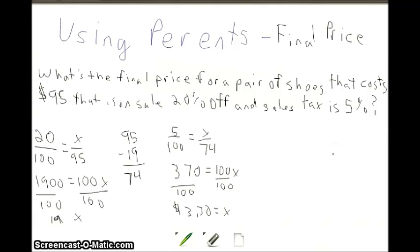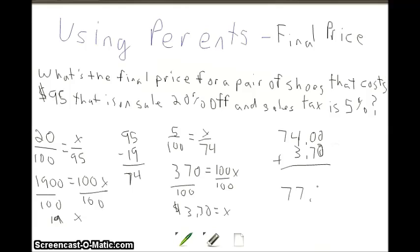We add that sales tax to the cost of the shoes: $74 plus $3.70 gives us a total price of $77.70, which is what you're going to have to pay for that pair of shoes.